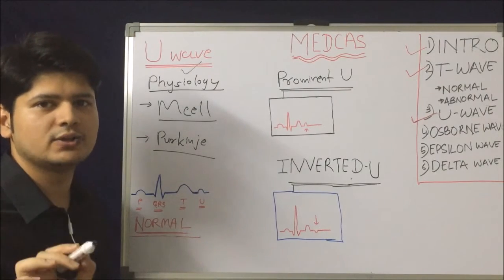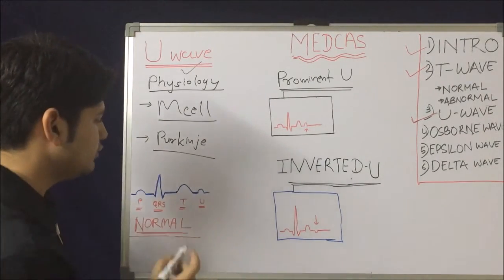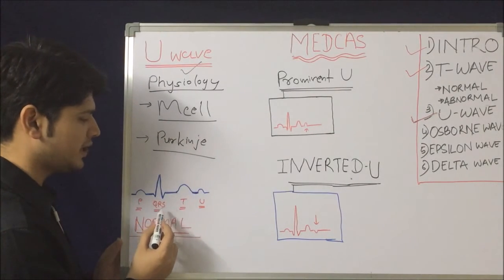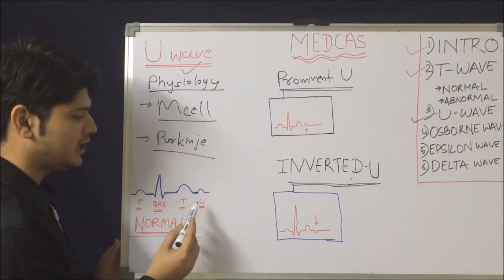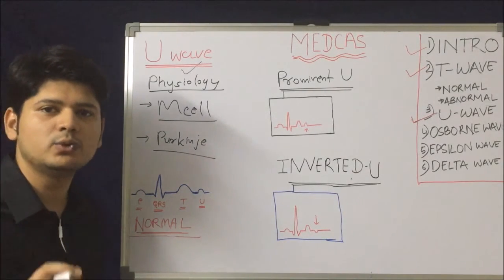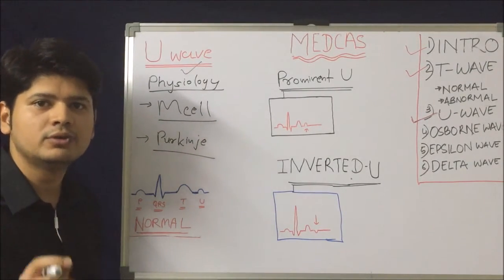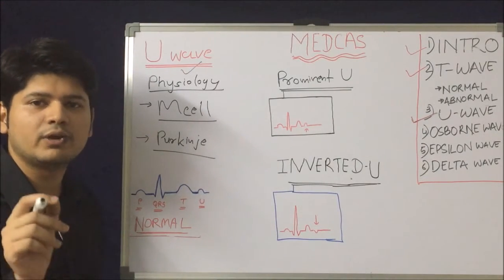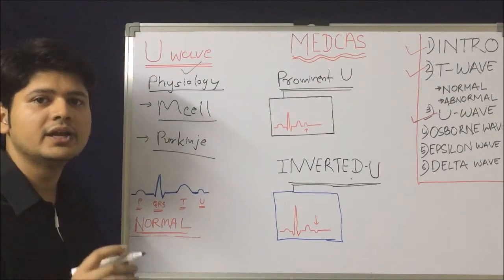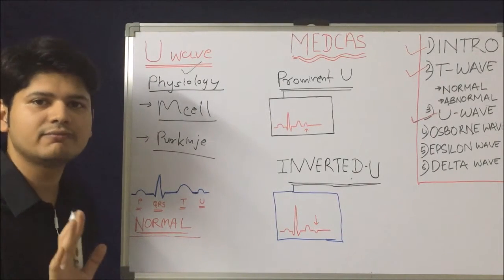This is the U wave physiology. Now let us see what is a normal U wave. The U wave follows the T wave, so the sequence is P wave, QRS, T, and U. Normal U waves are mostly seen in leads V2 and V3. The amplitude of the U wave should be less than 25% of the preceding T wave, and the normal U wave amplitude never exceeds more than 5 mm.